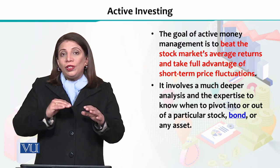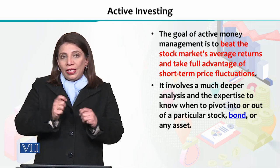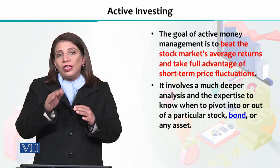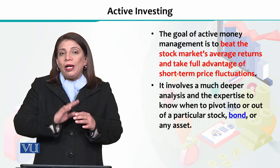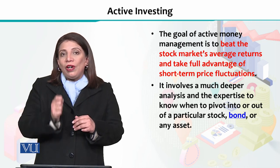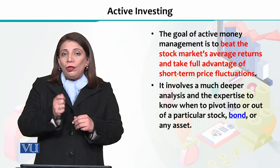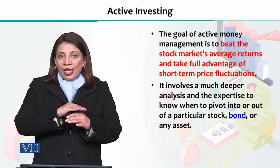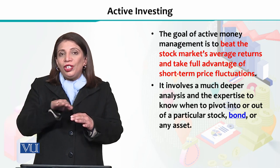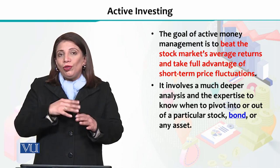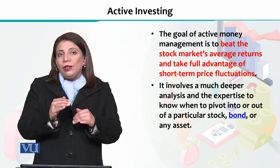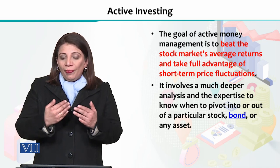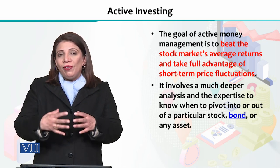If you are getting the average return in the market but you make more money through buying and selling, then you are successful in beating the market. The basic objective of active investment is to beat the market — to make more money than can be earned by simply investing in mutual funds or instruments that do not involve quick buying and selling.